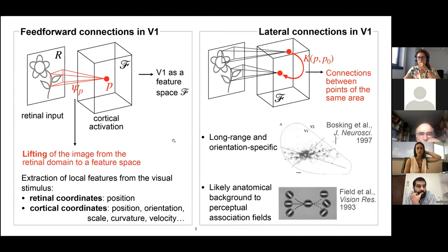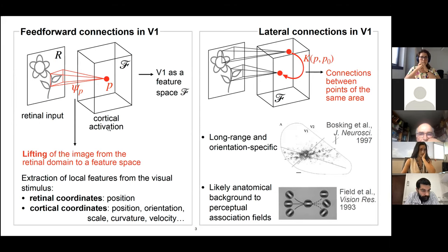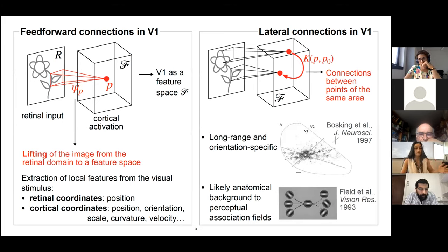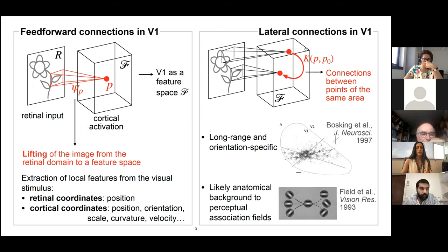I want to set a few notations. When I talk about feedforward connections entering V1, I'm referring to the transformation of a retinal image to the corresponding cortical activation. An image on the retina is lifted from the original spatial coordinates to a set of cortical coordinates that encode not only position, but possibly other features such as orientation, scale, and so on. So V1 can be modeled as a space of features. On the other hand, lateral connections link units that belong to the same area — we can think of them as a connectivity kernel expressing the strength of interaction between points of the feature space.